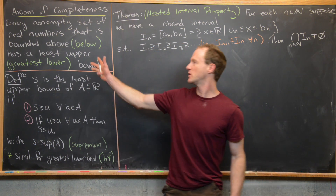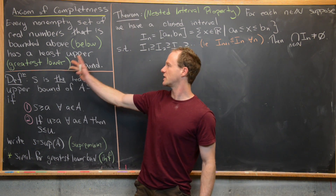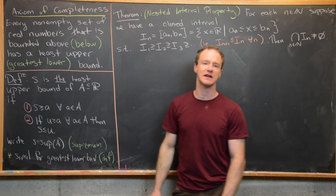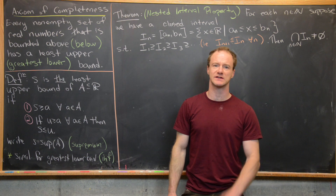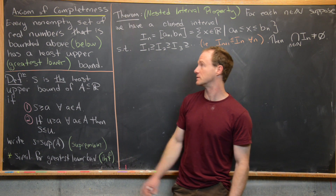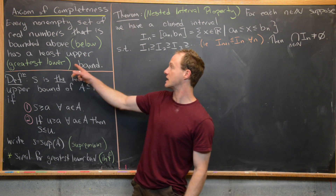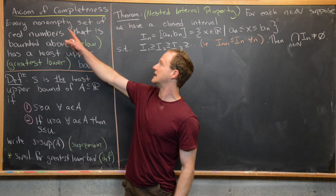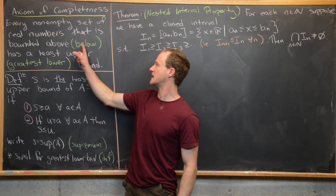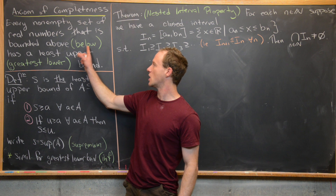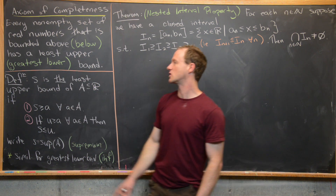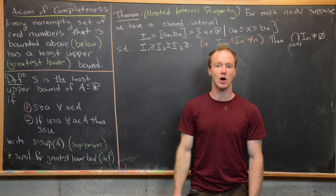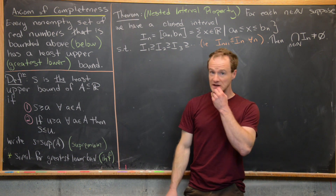I've put an alternative statement here in green, which is equivalent to the axiom of completeness: every non-empty set of real numbers that is bounded below has a greatest lower bound.